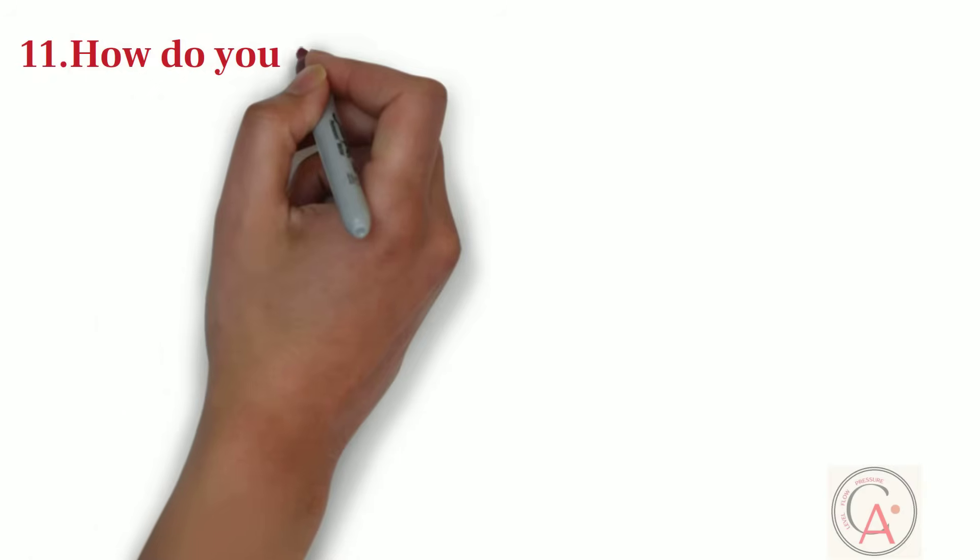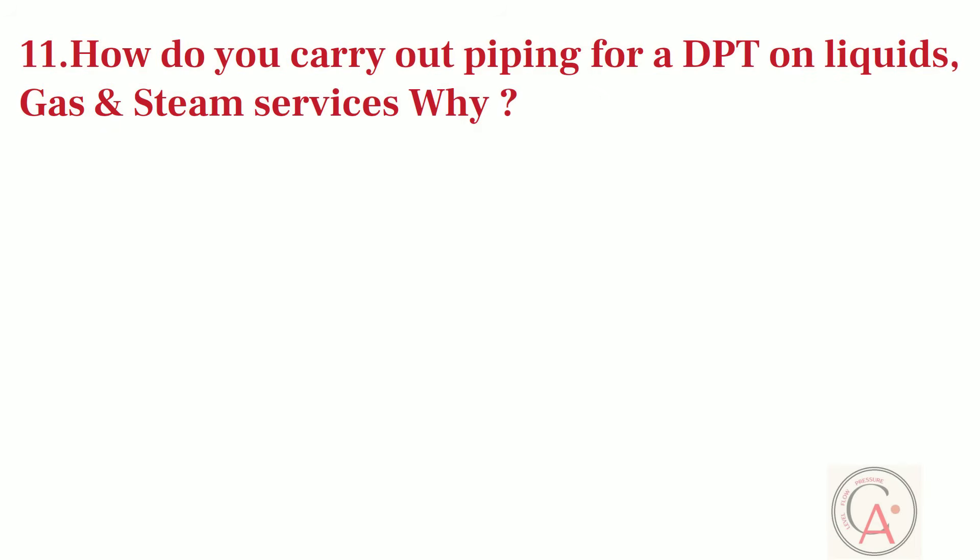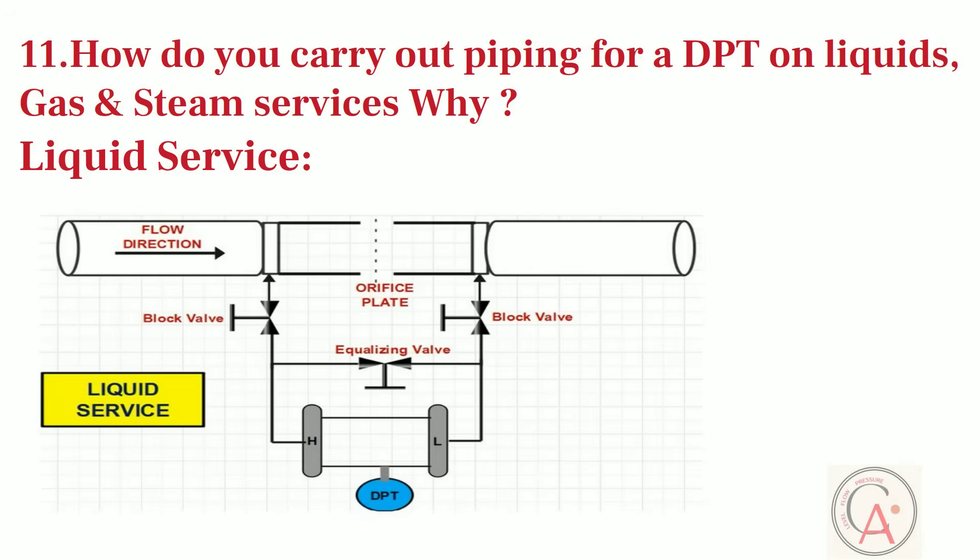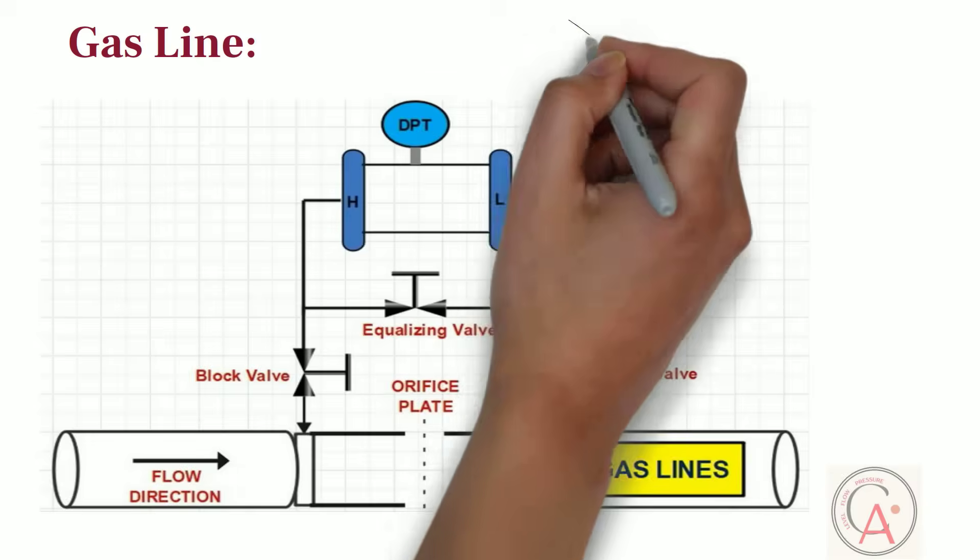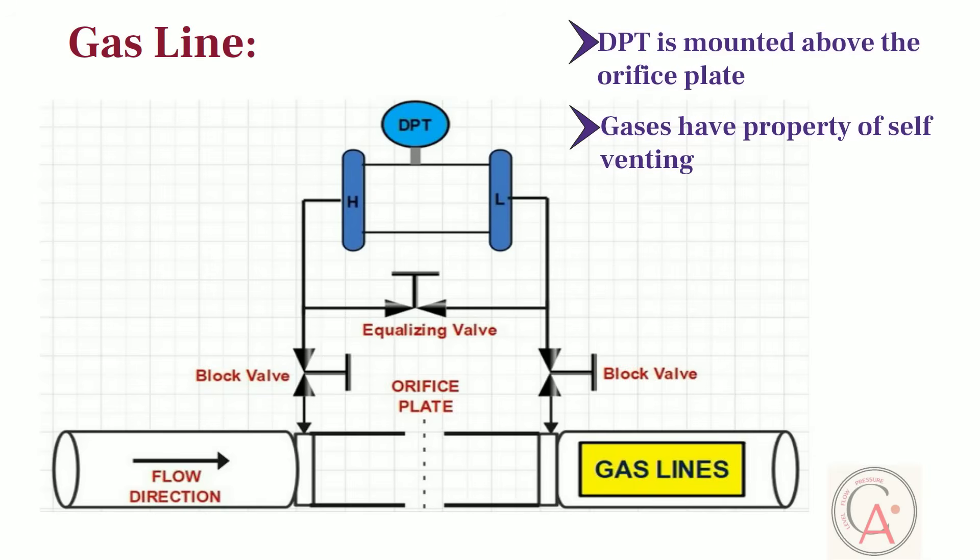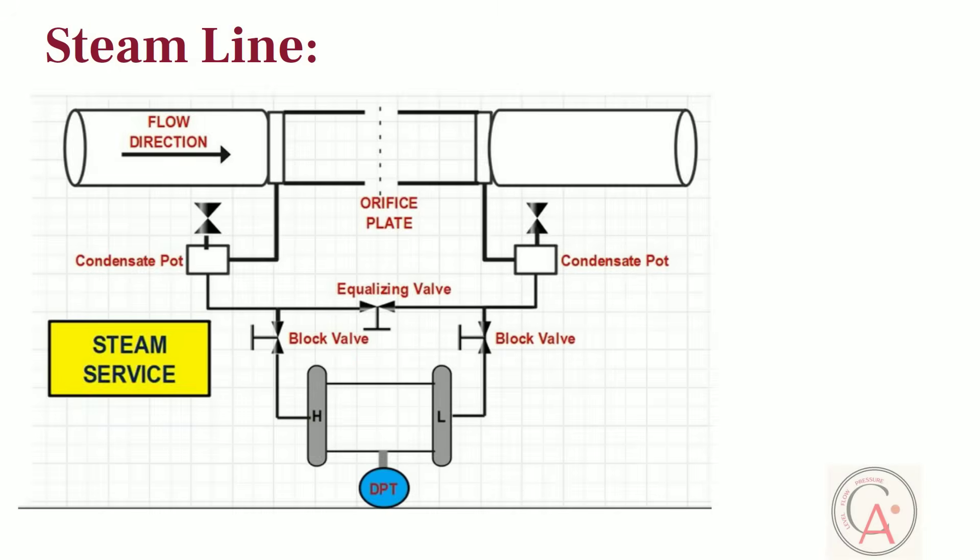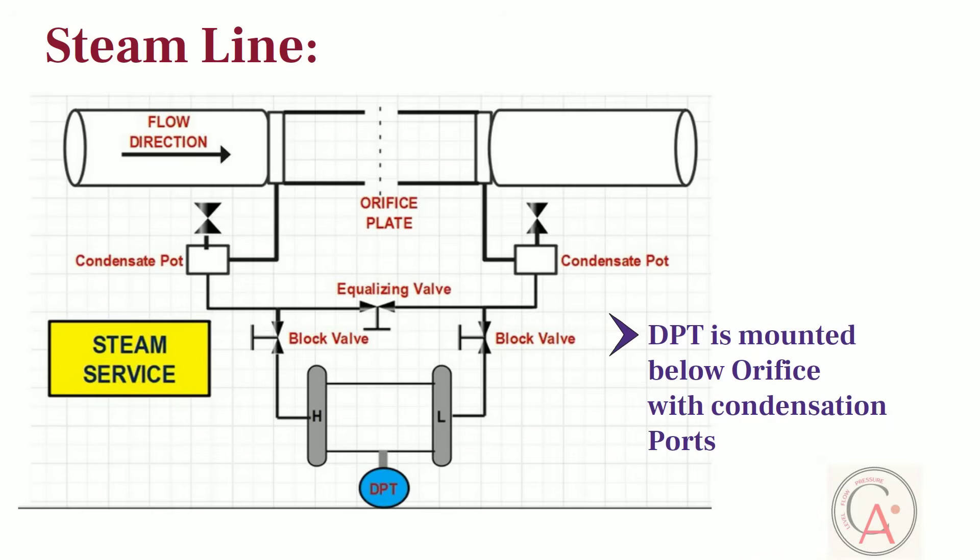Eleventh question is, how do you carry out piping for a differential pressure flow transmitter on liquids, gas and steam services, and why? As you can see from the diagram that, on the liquid lines, the transmitter is mounted below the orifice plate because of the fact that liquids have a property of self-draining. On gas service, the transmitter is mounted above the orifice plate because gases have a property of self-venting and secondly condensate formation. On the steam service, the transmitter is mounted below the orifice plate with condensate pots, and both the pots should be at the same level.